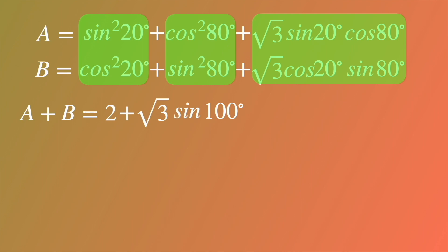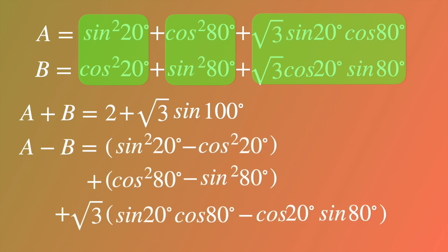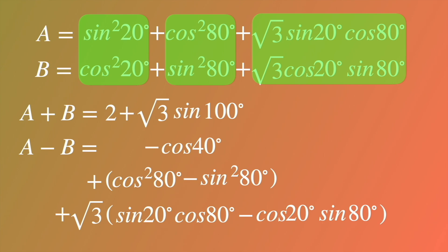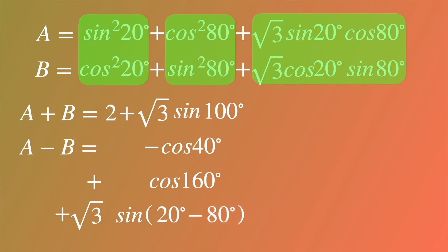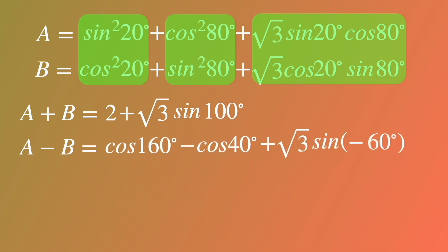Then where is the second equation? We will find A minus B equals the following expression. According to the formulas recalled: sine squared of 20 degrees minus cosine squared of 20 degrees equals minus cosine of 40 degrees; cosine squared of 80 degrees minus sine squared of 80 degrees equals cosine of 160 degrees; and the third term equals sine of 20 degrees minus 80 degrees. So A minus B simplifies to cosine of 160 degrees minus cosine of 40 degrees plus square root of 3 times sine of negative 60 degrees.